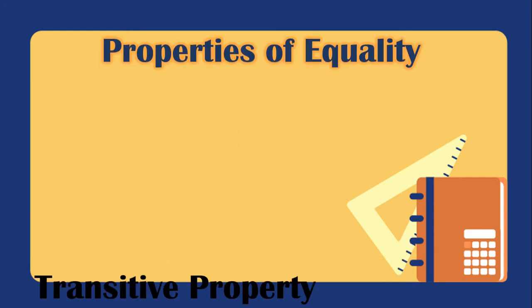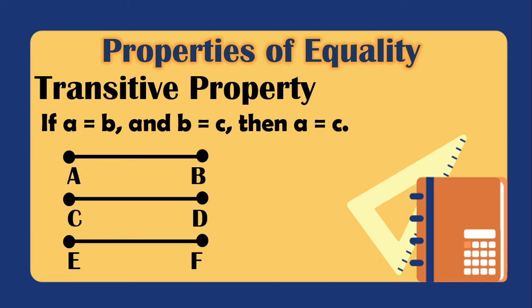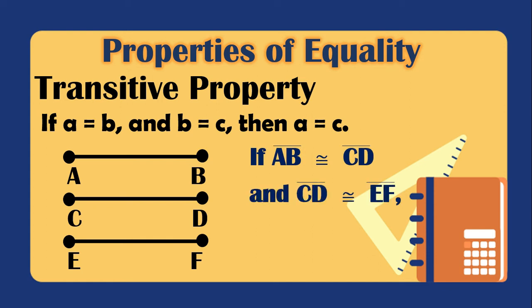The third is the transitive property: if A equals B and B equals C, then A equals C — you disregard the repeated term. For example, if segment AB is congruent to segment CD, and segment CD is congruent to segment EF, then segment AB is congruent to segment EF. We disregard segment CD because it is repeated.